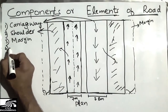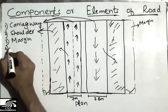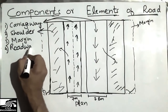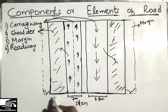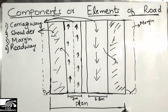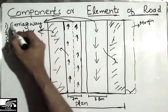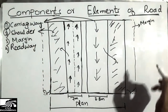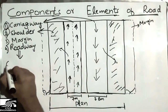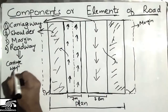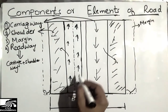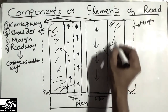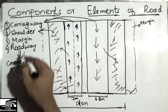The fourth component is the roadway. The roadway is a combination of two elements: the carriageway and the shoulder. It extends from one shoulder to the other shoulder, including the carriageway in between. So the roadway equals carriageway plus shoulder. This combined distance — shoulder, carriageway, and shoulder — is what we call the roadway of the road.